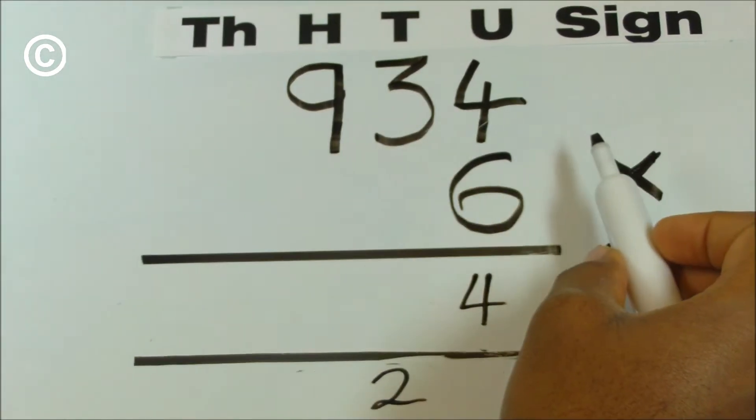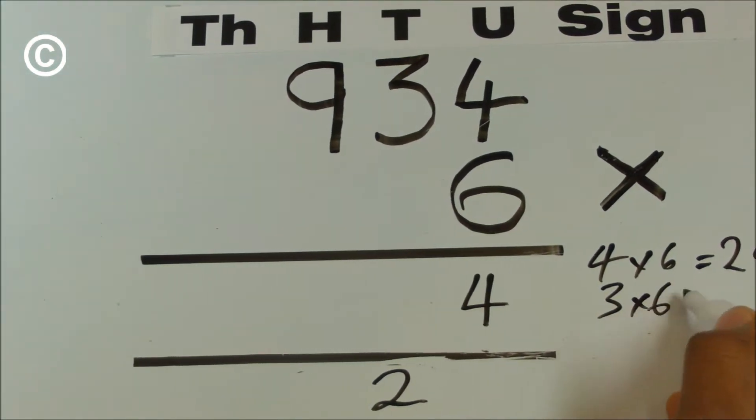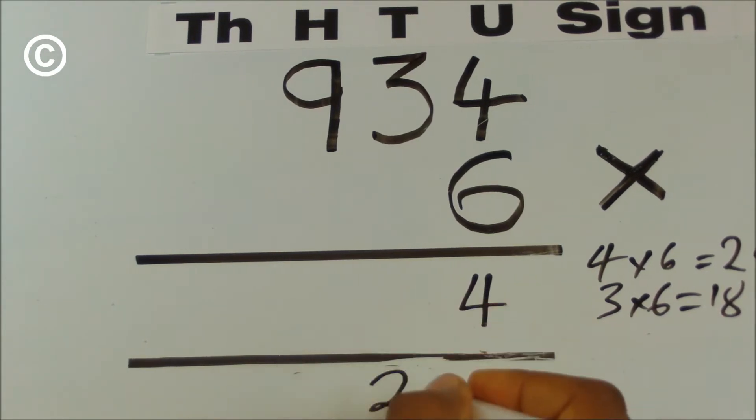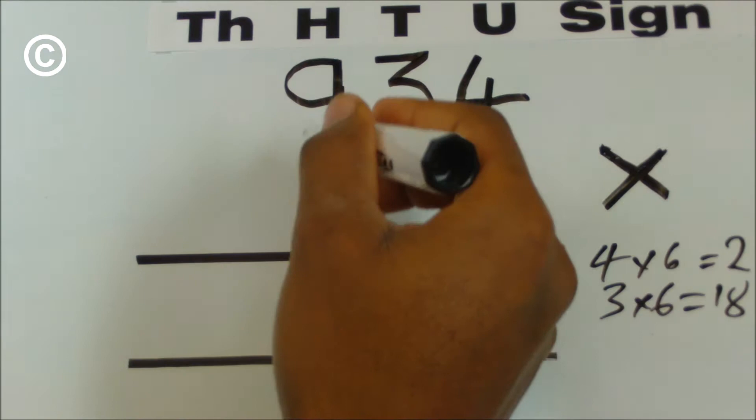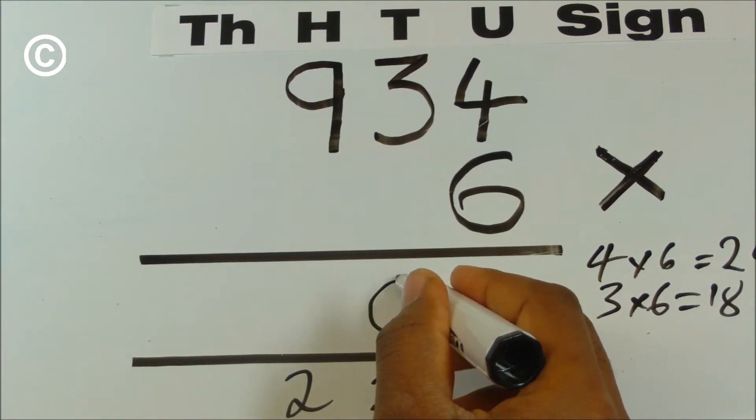3 multiplied by 6 which is 18. Add the 2 here that you carried over so 18, 19, 20. Carry that 2 over to the hundreds column and enter your 0 here.